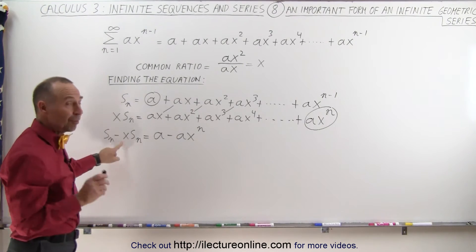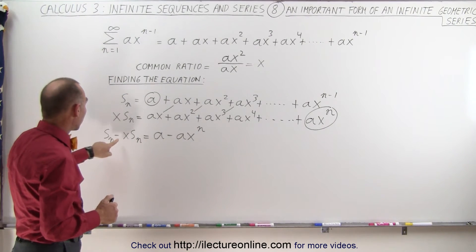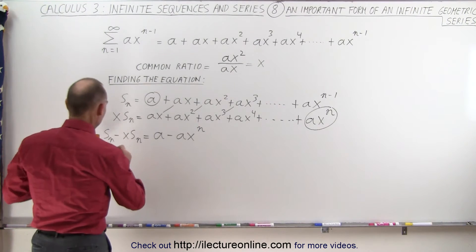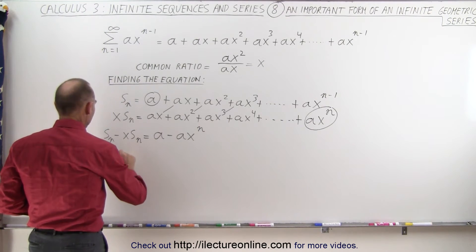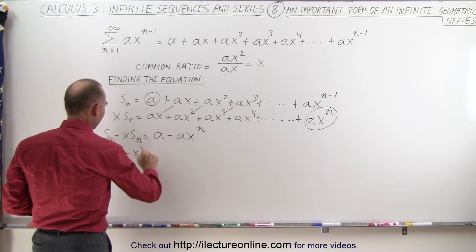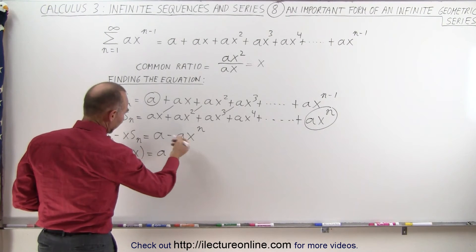If I now factor out an s sub n, because after all I'm trying to find an equation for s sub n, I get s sub n times 1 minus x is equal to a, and I can factor out an a here.